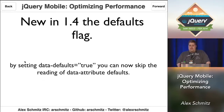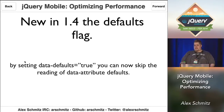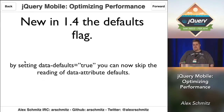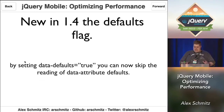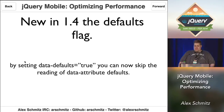Also in 1.4, we've added a defaults flag. By setting data-defaults true on any element, we won't parse data attributes for options — we'll just assume you want to use the default set. Reading data attributes is a pretty slow process, so by avoiding reading all of them every time we initialize a widget, it really improves performance.